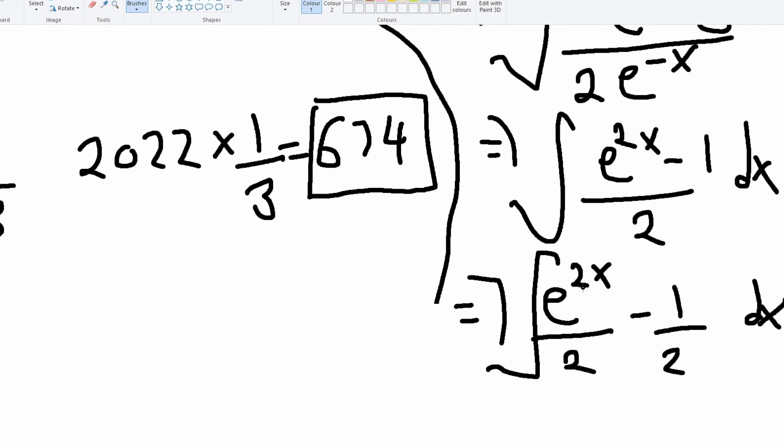And this is just easy, we're just going to divide this by 2 which is just going to give us e to the 2x divided by 4 minus this integrated a half x.